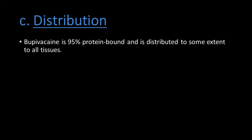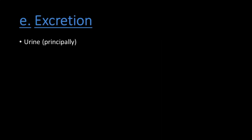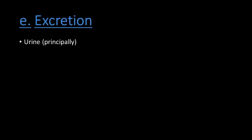Distribution: 95% protein bound, distributes to some extent in all tissues. Metabolism: amide-type local anesthetics such as Bupivacaine are metabolized primarily in the liver by conjugation with glucuronic acid. The major metabolite of Bupivacaine is 2,6-pipecoloxylidide, mainly catalyzed by cytochrome P450 enzyme subtype 3A4.